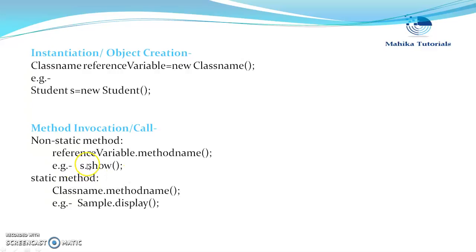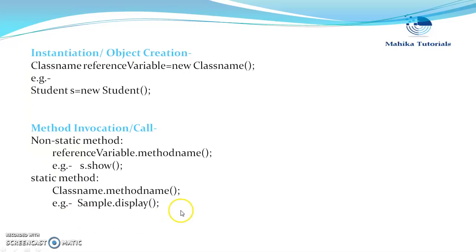If we have to call a static method, we can call it directly with the class name — there is no need to create an instance. So we give class name dot method name to call the static method. For example, if there is a class 'Sample' with a static method 'display', we can invoke it as 'Sample.display'. Let's take one example in Eclipse to make it more clear.